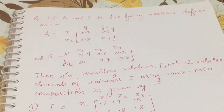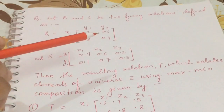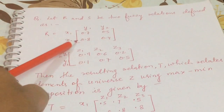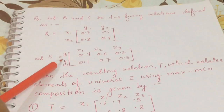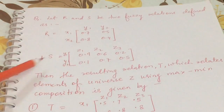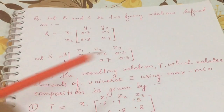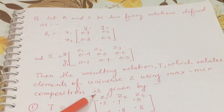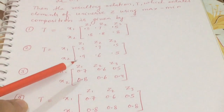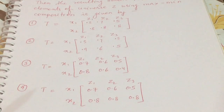Today we'll see one problem from fuzzy logic that was asked in UGC Net Computer Science July 2016. The question was: let R and S be two fuzzy relations defined as R is a relation over x1, x2 and y1, y2 with values 0.7, 0.5, 0.8, 0.4. S is a relation over y1, y2 and z1, z2, z3 with values 0.9, 0.6, 0.2, 0.1, 0.7, 0.5. The resulting relation T relating elements of the universe using max-min composition is given by — select the correct option.